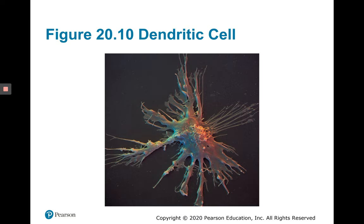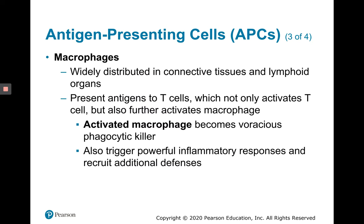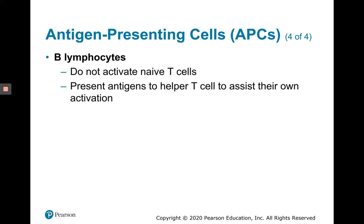Macrophages are also antigen-presenting cells, widely distributed in connective tissues and around lymphoid organs. They present antigens to T cells, which not only activates T cells but can further activate the macrophage itself — activated macrophages become voracious phagocytic killers. This can also trigger powerful inflammatory responses that recruit additional defenses to a site of infection. B lymphocytes are antigen-presenting cells as well, but they are more interested in their own activation, presenting antigens to helper T cells to assist in their own differentiation and proliferation.